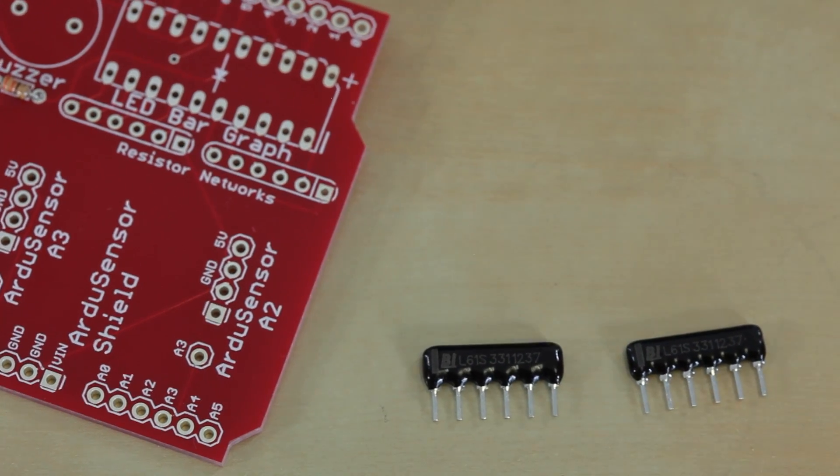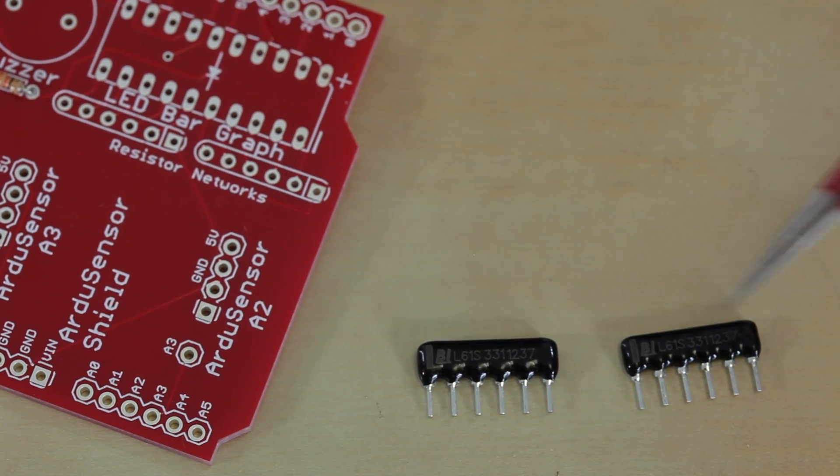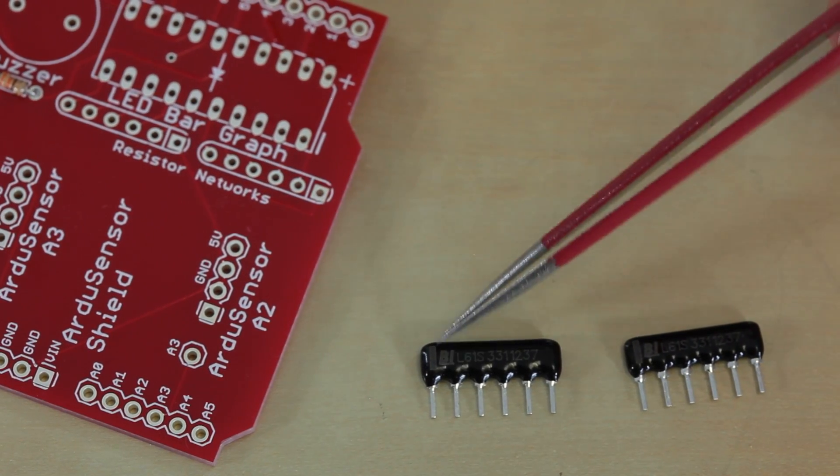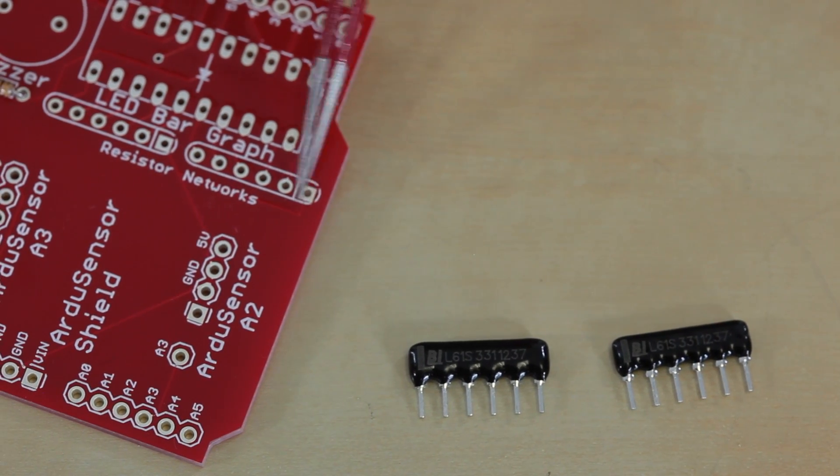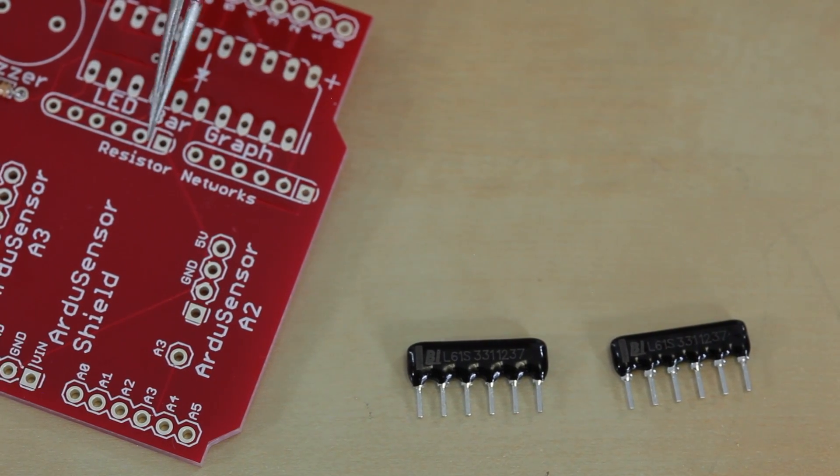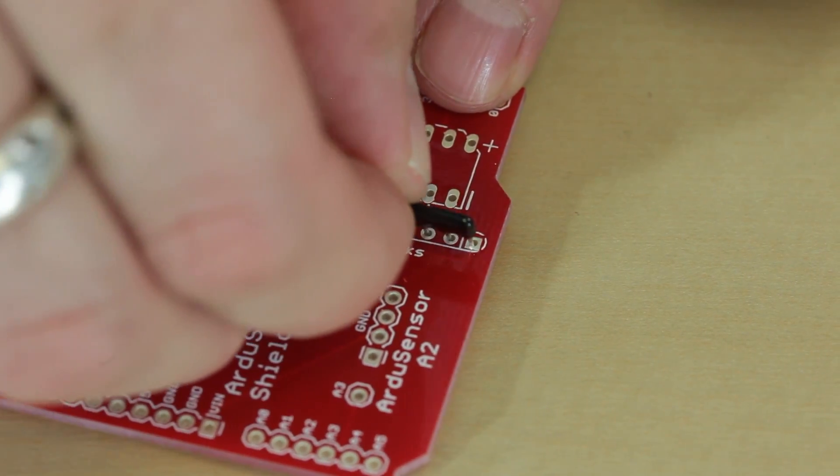Next we're going to install the resistor networks. The resistor networks go here on the main shield board. If you look closely, you'll notice a little white stripe on the resistor networks. That stripe will coincide with this little square and this little box on the board.